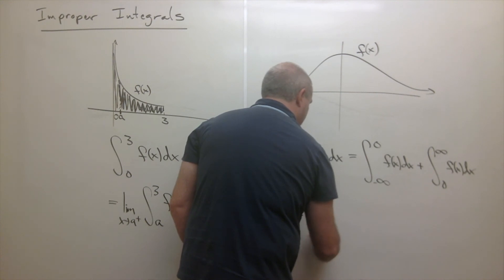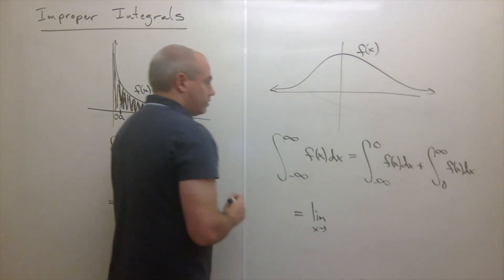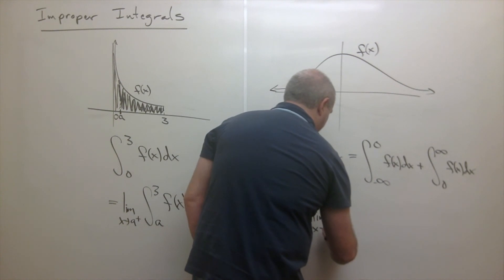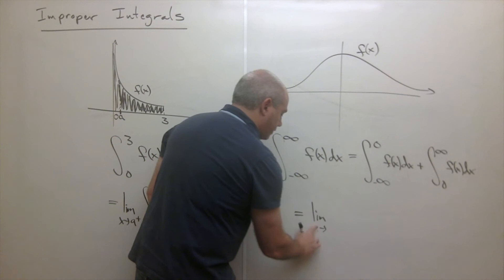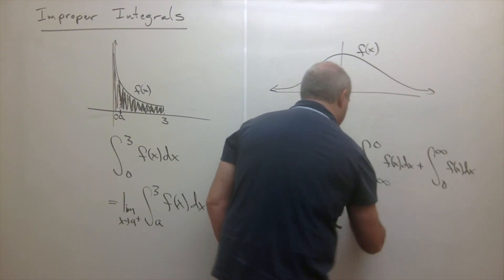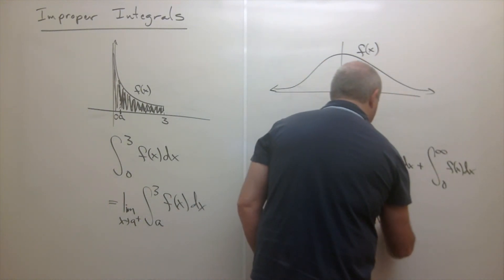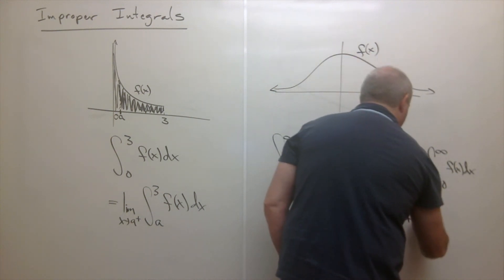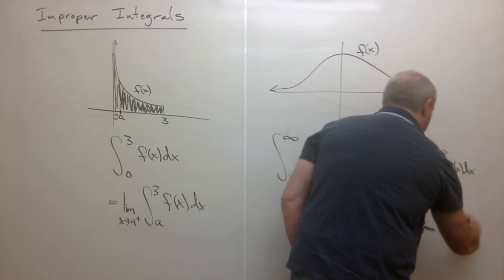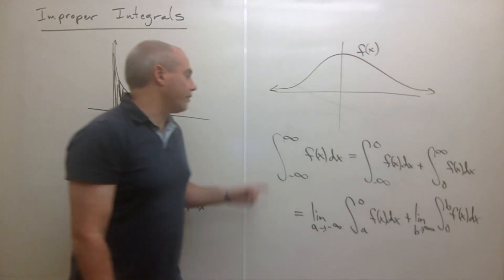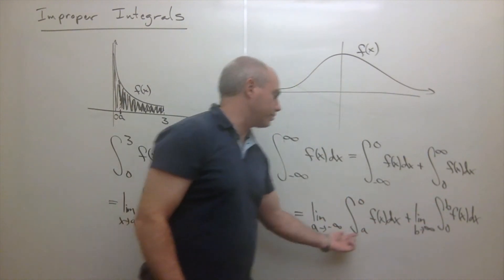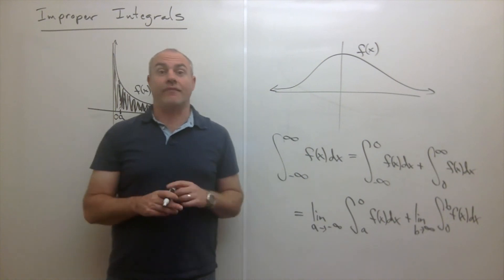The first piece becomes the limit as a goes to negative infinity of the integral from a to 0 of f of x dx, plus the limit as b goes to infinity of the integral from 0 to b of f of x dx. So the way to compute the integral from negative infinity to infinity of a function is to break it into two integrals, each of which is improper and must be written as a limit.